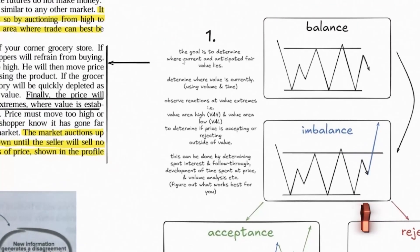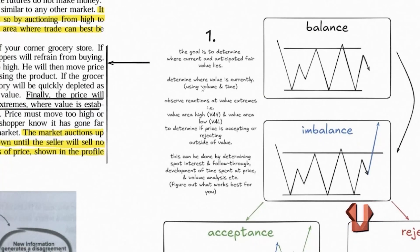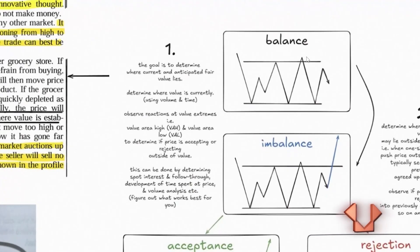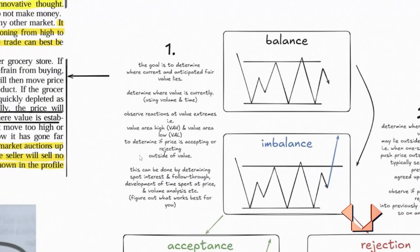The goal is to determine where current and anticipated fair value lies. You can use volume or time for that. In this case we're going to use a very simple tool and then observe reactions at value extremes to determine if price is accepting or rejecting outside of value. There are multiple ways to go about doing this.